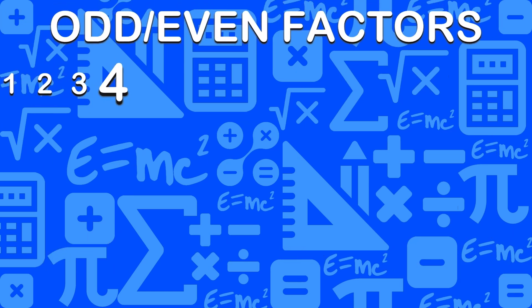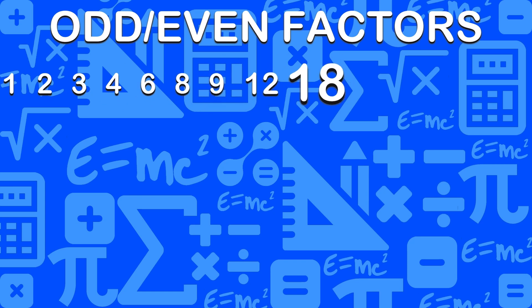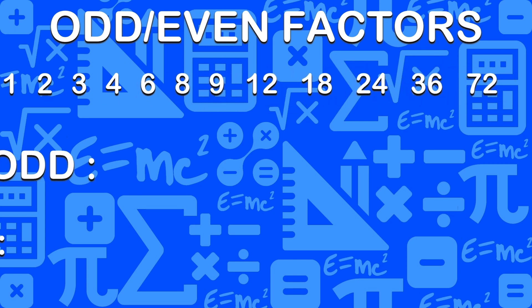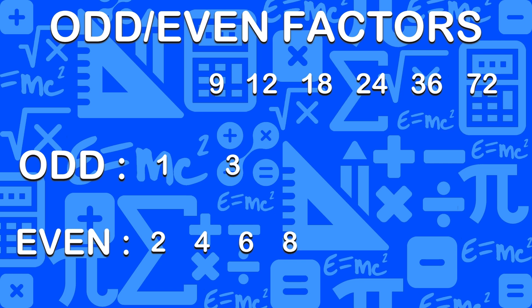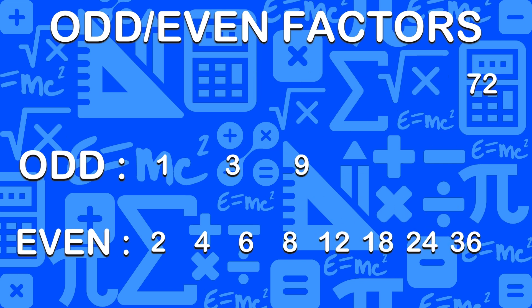Even factors are those that are divisible by 2. In 72, we have 2, 4, 6, 8, 12, 18, 24, 36 and 72 as even factors. And 1, 3 and 9 are odd factors.